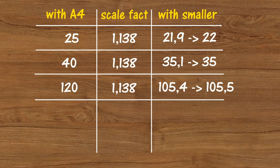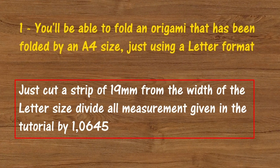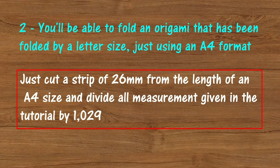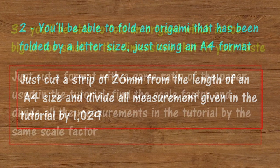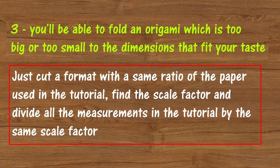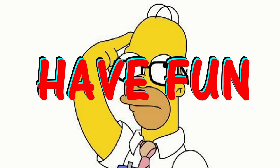You will get a smaller airplane with the same shape as the bigger one. Let's summarize. How to fold an origami designed for A4 just using a letter format? Cut a strip of 19 mm from the width of the letter size and divide all measurements by 1.0645. Second: how to fold an origami designed for letter size using an A4 format? Cut a strip of 26 mm from the length of an A4 size and divide all measurements by 1.029. Third: how to fold an origami that is too big or too small? Cut a format with the same ratio as the paper used in the tutorial, find the scale factor, and divide all measurements by that factor. I hope everything was clear — have fun folding. Bye-bye.